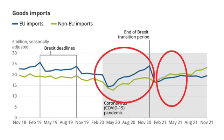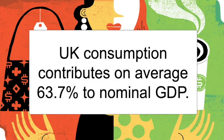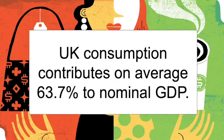So why is that? Well, to begin with, the UK is a consumer-driven economy — UK consumption contributes an average of 63.7% towards nominal GDP. If we consider all the components of aggregate demand, consumption is the biggest contributor towards GDP. Therefore, if we do see a rise in aggregate demand, let's say it's from consumption, then we're going to need the resources and the output to match that rise in demand from the UK population.